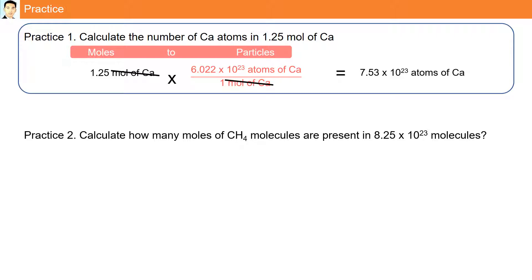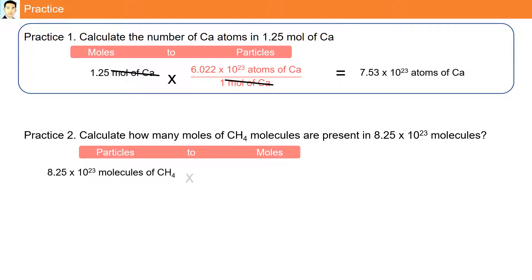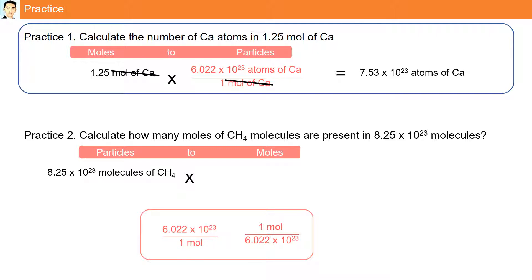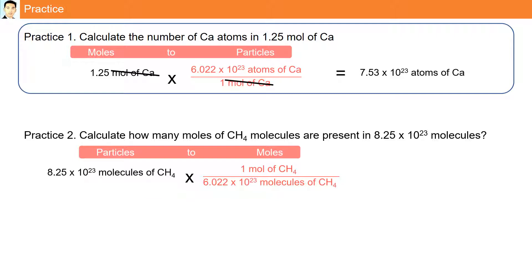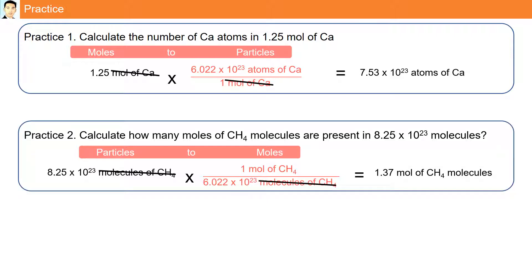Question 2. Calculate how many moles of CH4 molecules are present in 8.25×10²³ molecules. We are going from particles to moles, so we select the second conversion factor: 1 mole of CH4 over 6.022×10²³ molecules of CH4. When we cancel the molecules of CH4 and divide, our final answer is 1.37 moles of CH4 — the moles present in 8.25×10²³ molecules.